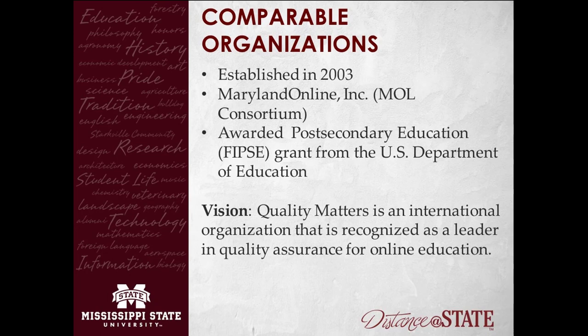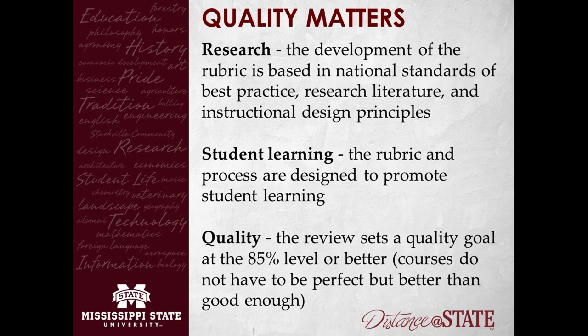With their vision, Quality Matters is an international organization recognized as a leader in quality assurance for online education. What drives them: the rubric is based on national standards and a survey of best practices. If you go to their website and research library, you can pull up each standard and look at literally hundreds to thousands of research articles backing up each one of those standards. So there's really nothing to argue about — it's heavily backed by academic research.